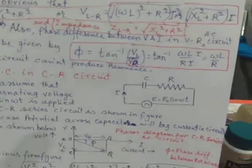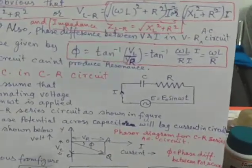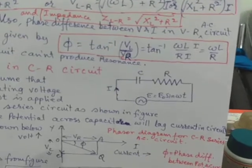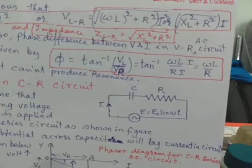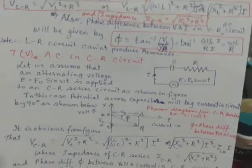Now, phase difference is clear-cut: phi equal to tan inverse VL upon VR. VL is omega L I by R I equal to omega L by R.